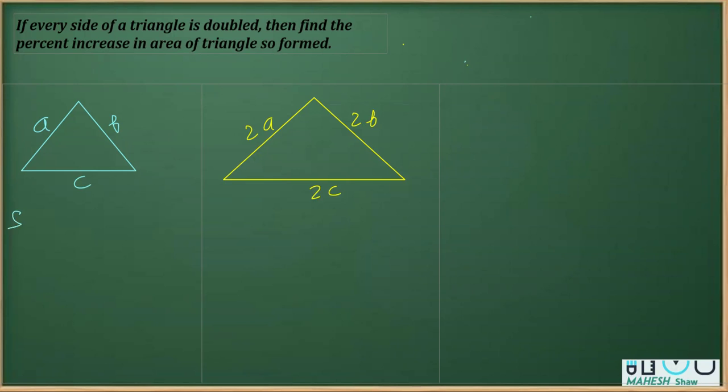Now, for finding the area, we need the semi-perimeter, which is the sum of the sides of this triangle divided by 2, and let's say mark it equation 1. And likewise, we can get the area, which is whole under root: S, S minus A, S minus B, and then S minus C. That is the formula.